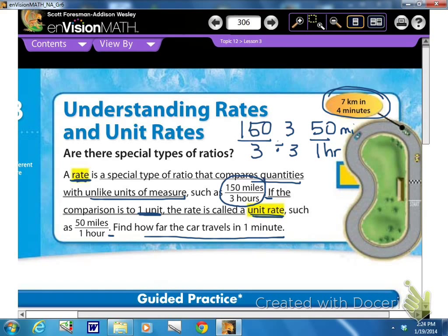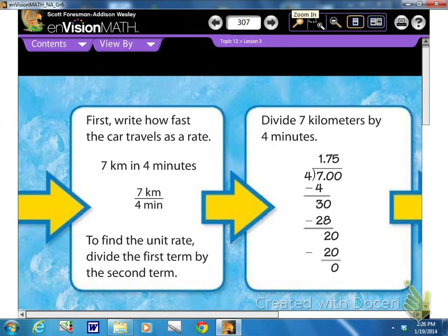Now in this case, we're going to look up here, and we're looking at 7 kilometers in 4 minutes. Alright, let's see what they do on the next page. Okay, so the first thing you're going to do is write how fast the car travels as a rate. So 7 kilometers in 4 minutes becomes 7 kilometers over 4 minutes. To find the unit rate, divide the first term by the second term. And 4 is smaller, so that makes it easier anyway. So we're going to divide 7 kilometers by 4 minutes. They set it up here to show you, and it becomes 1.75.